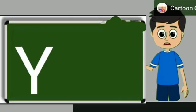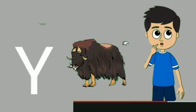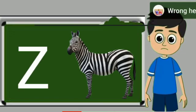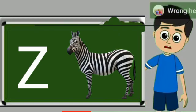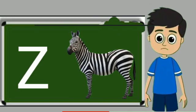Y for yak. Yak means bell. Z for zebra. Zebra means zebra.